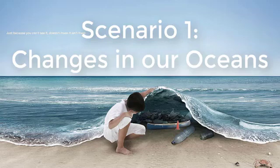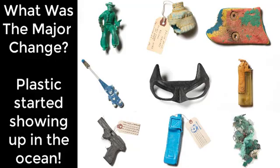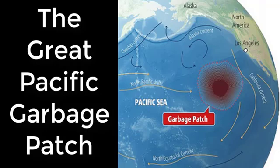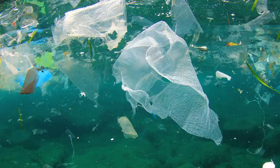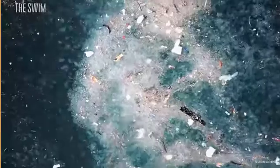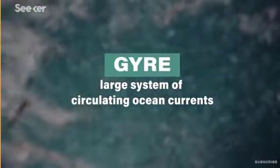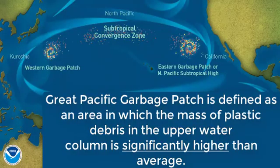Scenario one deals with our oceans. The change came about when humans invented plastic and it started making its way into the ocean. Have you ever heard of the Great Pacific Garbage Patch? It is also described as the Pacific Trash Vortex — trillions of pieces of trash caught in a gyre in the central North Pacific Ocean. A gyre is a large circular current that threads through the world's oceans, and this is where the plastic gets caught. The patch is defined as an area in which the mass of plastic debris in the upper water column is significantly higher than average.